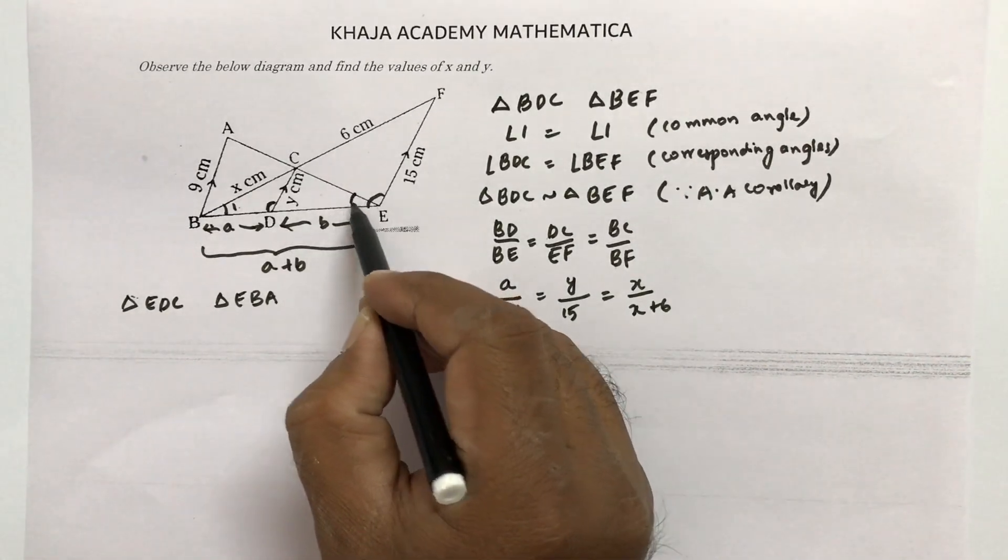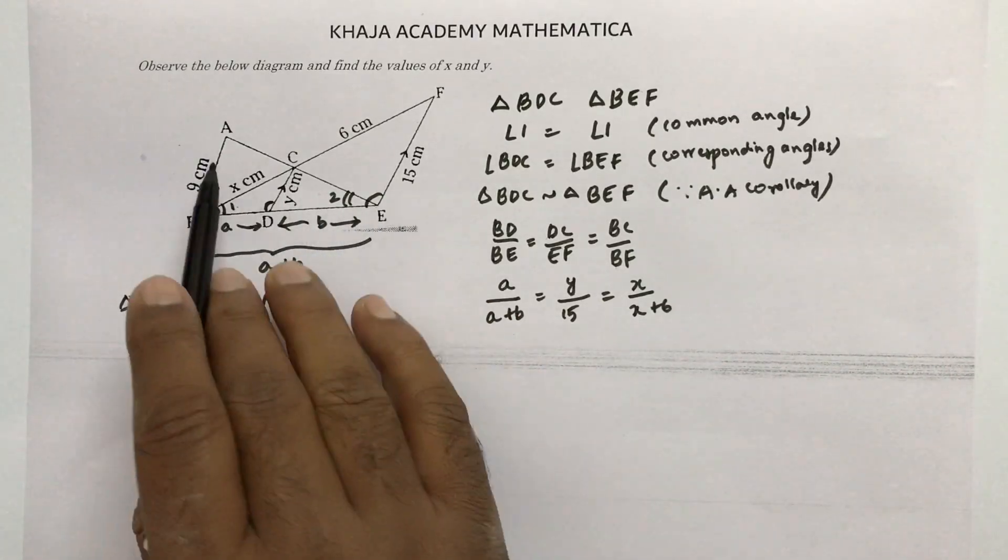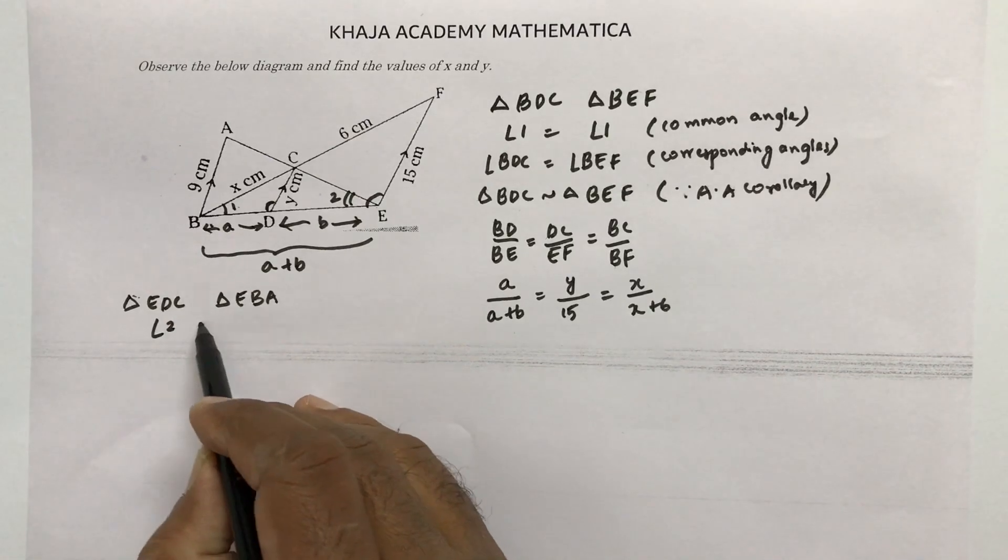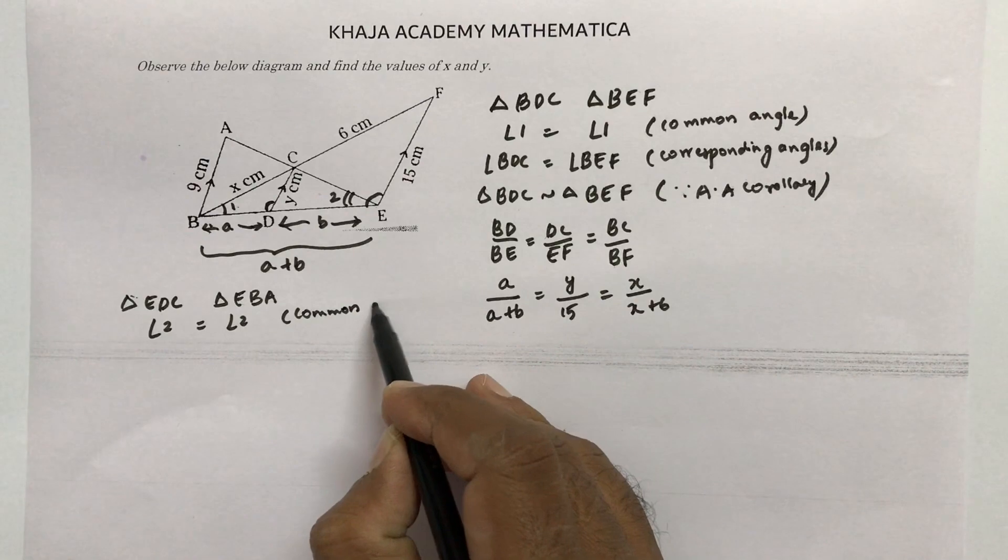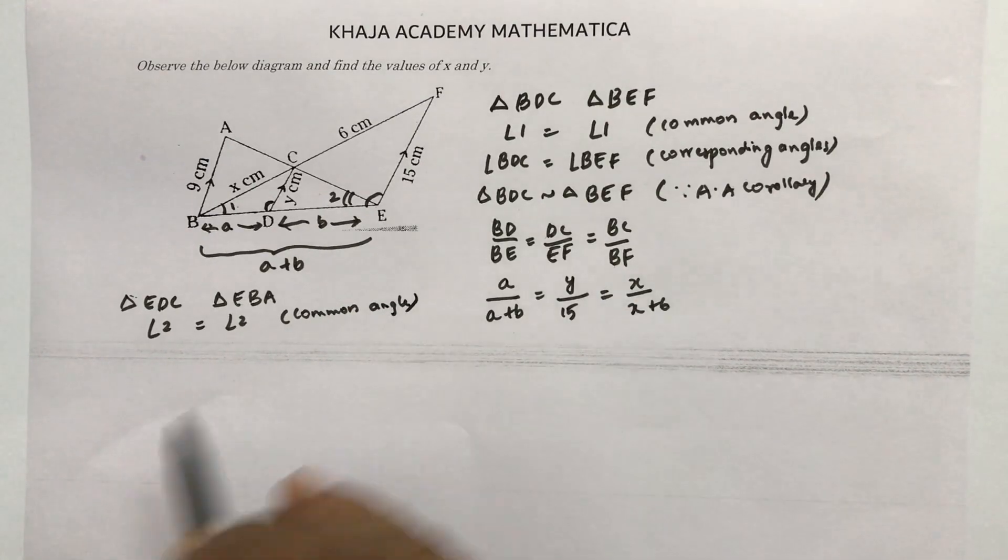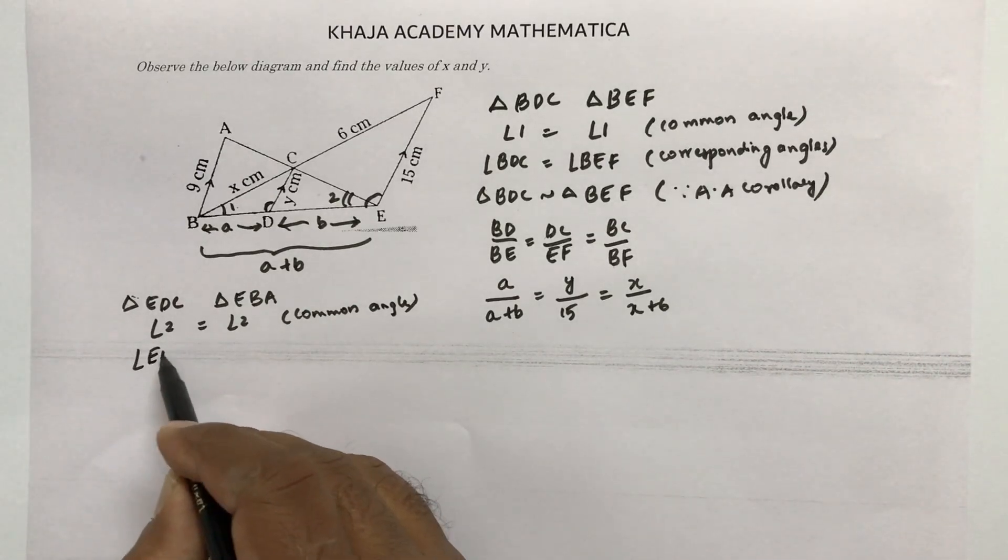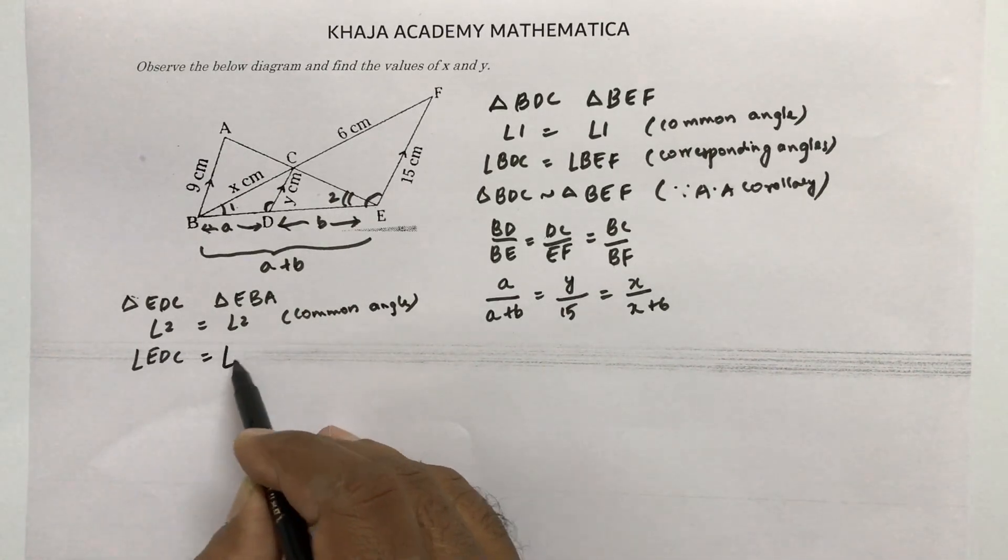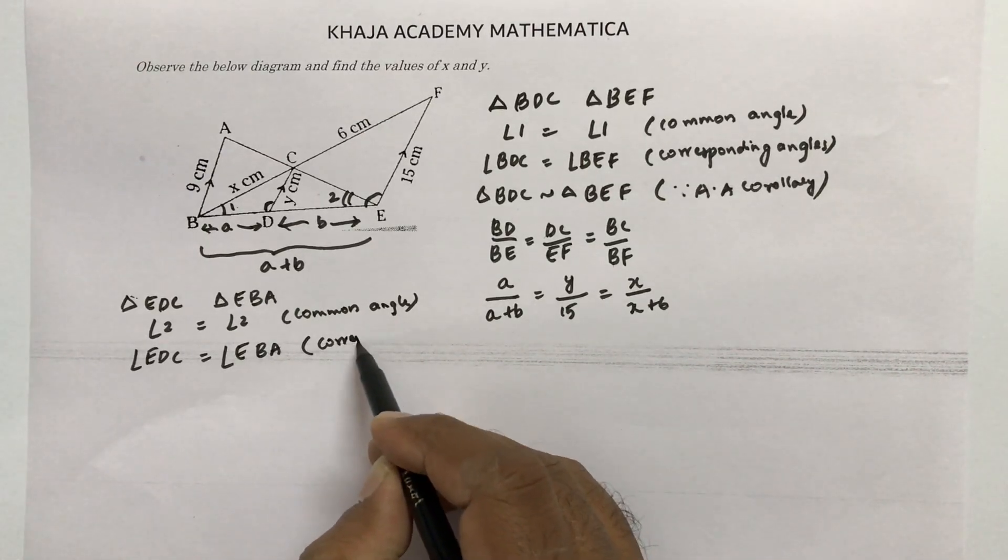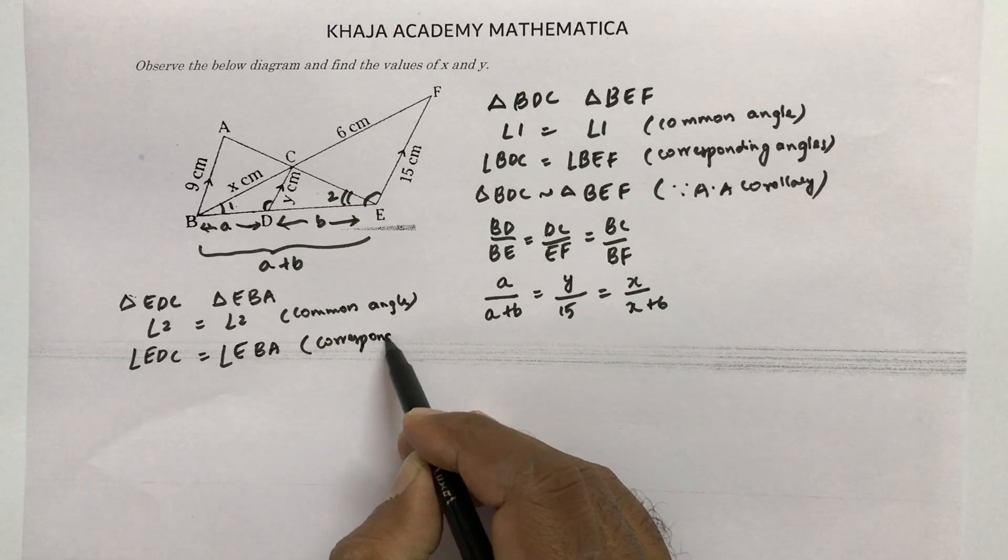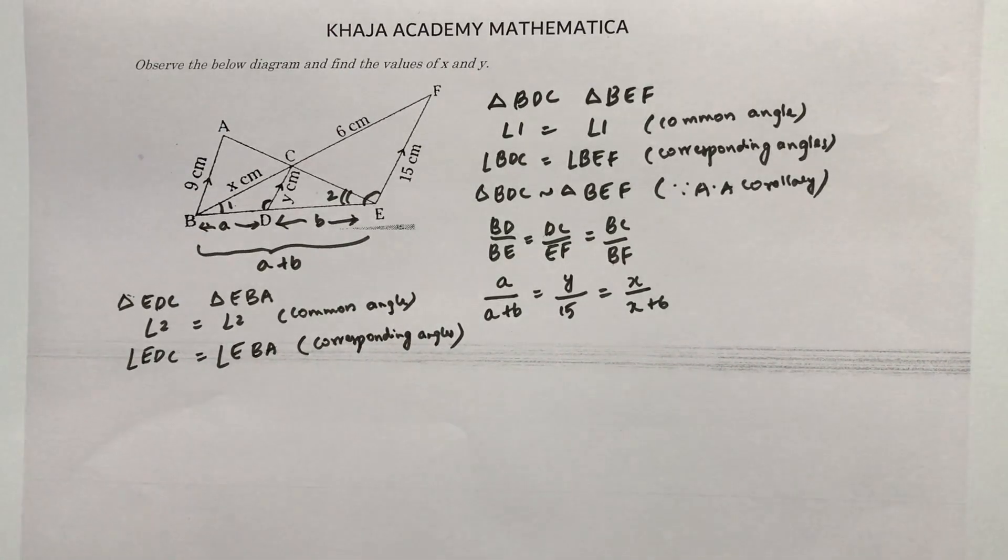Now here this angle, angle 2, is nothing but DEC equals BEA. So angle 2 you can write it as like common angle. And same from here EDC. Angle EDC is equal to angle EBA. Those are like corresponding angles.